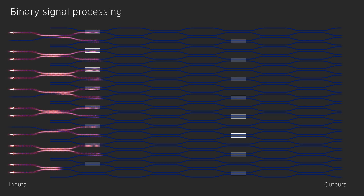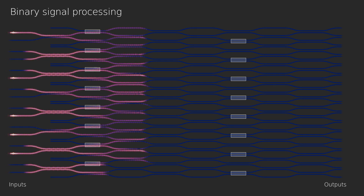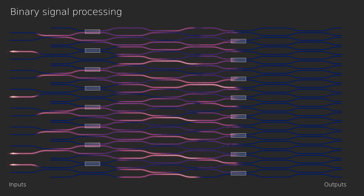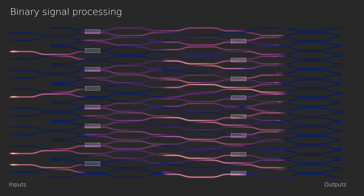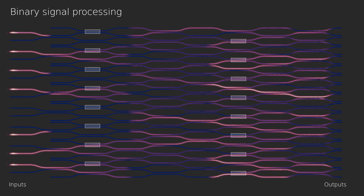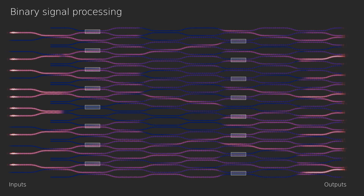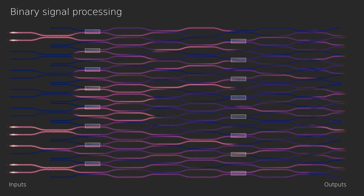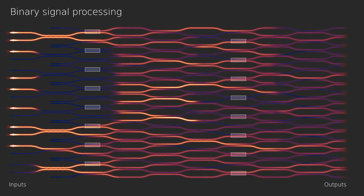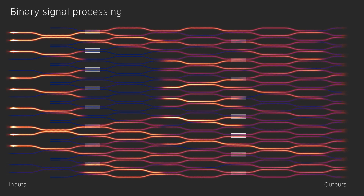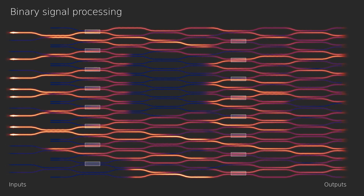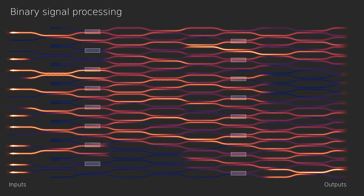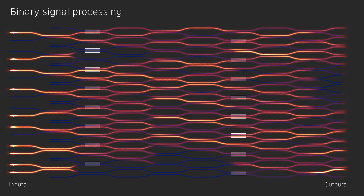In the final simulation, the eight light sources on the left transmit a binary time-varying input signal, which is then processed by the circuit. In a real chip, the result of this computation would be extracted by measuring the light intensities on the output ports on the right, using photodiodes.